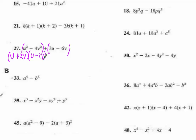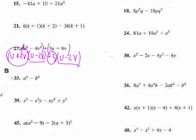Over here I have 3u minus 6v — those aren't perfect squares, so I can't use difference of squares. But 3 goes into both of them, so I'm going to have 3 on the outside, and 3u divided by 3 is u minus 2v. Now this is a little tricky because we notice we have u minus 2v and u minus 2v. Since we've learned that if you're multiplying something on the outside of a binomial you can group those together, that means I have u plus 2v plus 3, and I'm multiplying all three of those terms by u minus 2v.